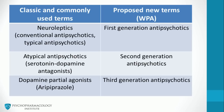First generation antipsychotics include drugs such as chlorpromazine, haloperidol, and fluphenazine, among others. The term atypical antipsychotics is most commonly used for second generation antipsychotics. Based on their shared pharmacological properties, these drugs are also called dopamine-serotonin antagonists. Drugs that act as dopamine partial agonists fall under the third generation antipsychotics category; currently the only FDA approved drug in this group is aripiprazole.